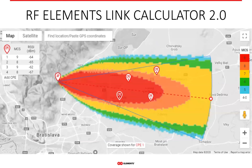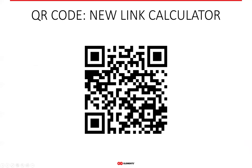If you're wondering how to figure out the downtilt you need to use with the horns to leverage this feature, our link calculator is the right tool — it plots the MCS zones directly on the map. When you adjust the downtilt, it will replot the coverage and you will see how far you are actually covering and with what MCS level. Here is a QR code you can scan and come back to. We'll put a copy of the recording of this webinar on our YouTube channel and let everyone know once it's published.